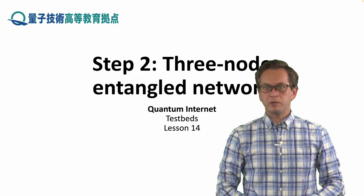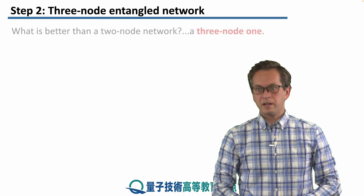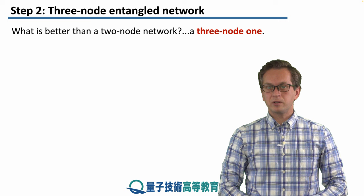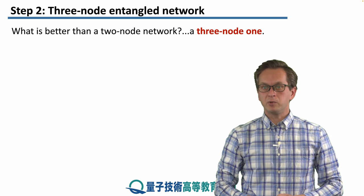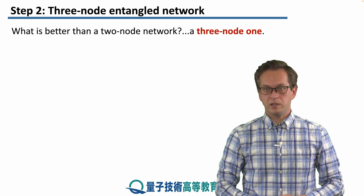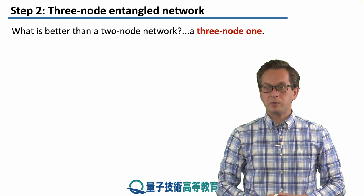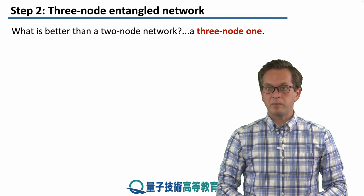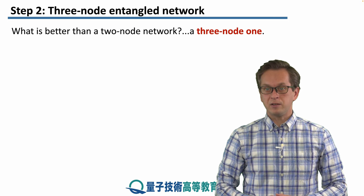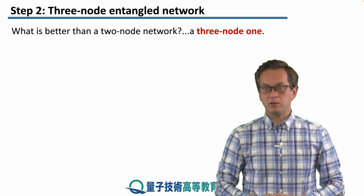Step two: three-node entangled network. In a previous step, we talked about how to establish entanglement between two nodes of a network. Here, we're going to talk about experiments that scaled it up by adding another node, and they built a three-node network.